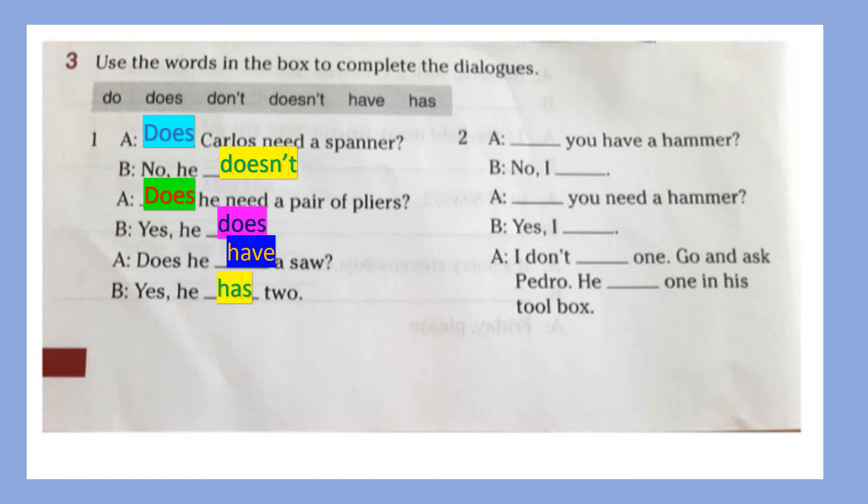Now let's read number two. A: space space you have a hammer. B: No, I space. A: space space you need a hammer. B: Yes, I space. I don't space one. Go and ask Pedro. He one in his toolbox.